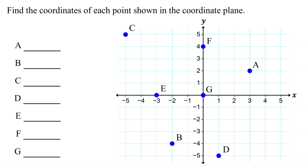In this lesson, you will learn how to find the coordinates of a point on a coordinate plane. As a quick recap, a coordinate plane is made up of a horizontal number line called the x-axis and a vertical number line called the y-axis. Therefore, the coordinates of any point consist of an x-coordinate and a y-coordinate.